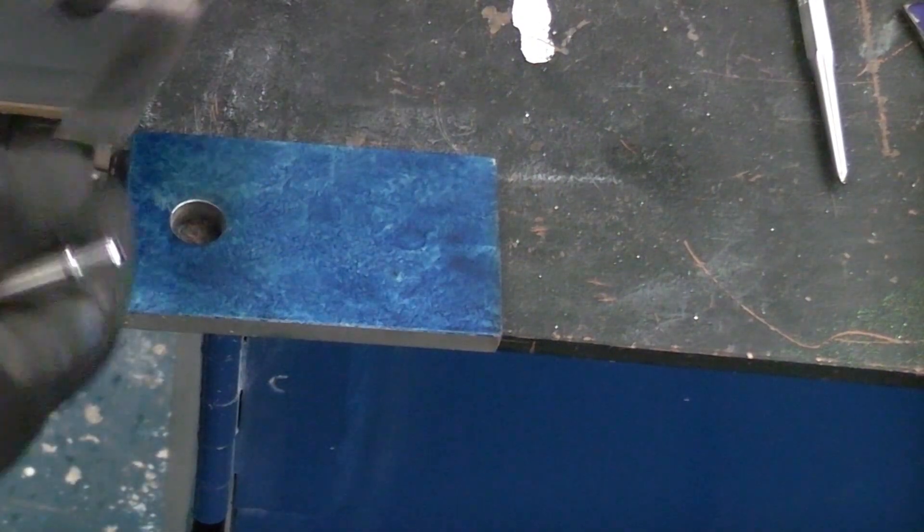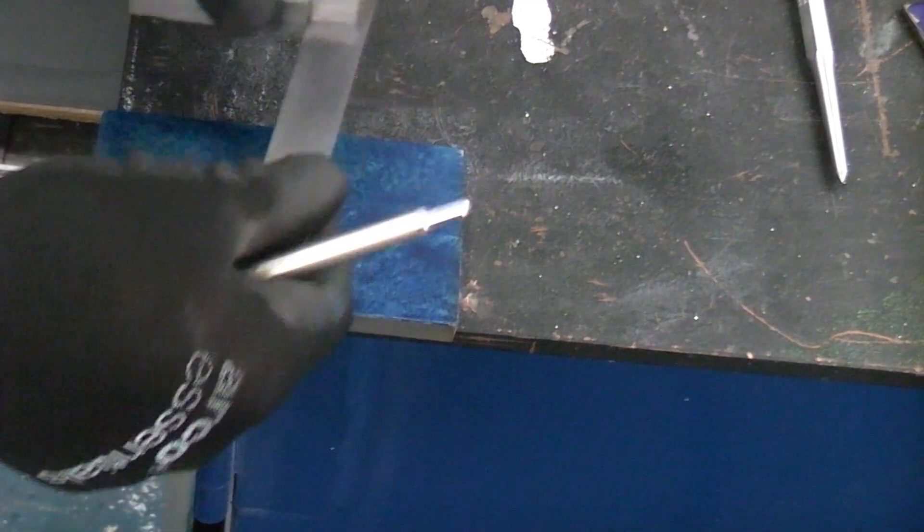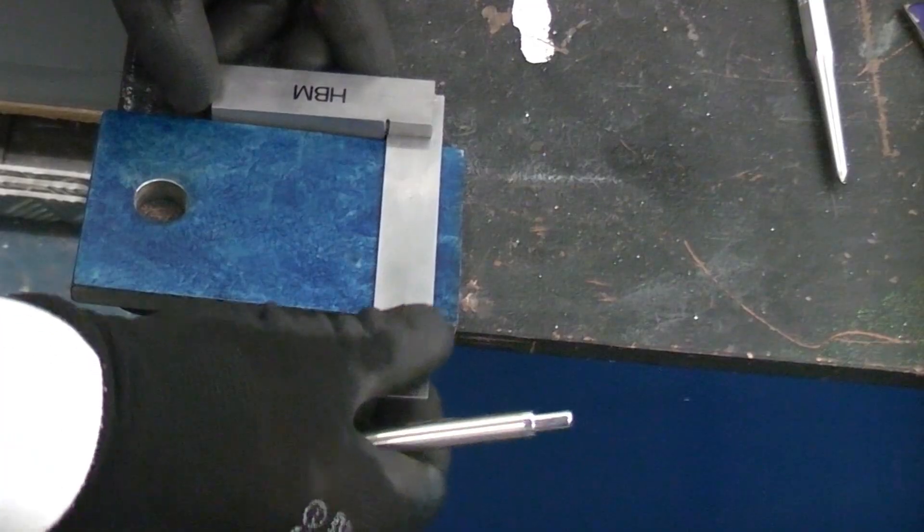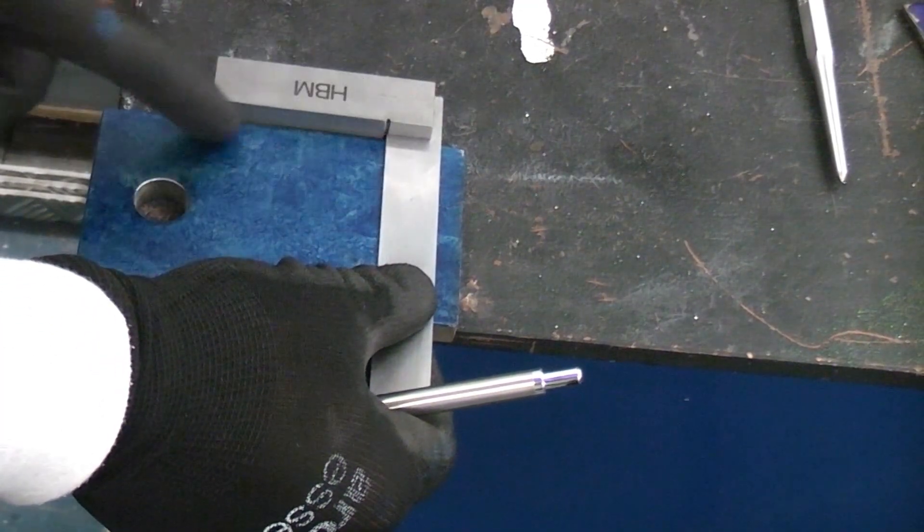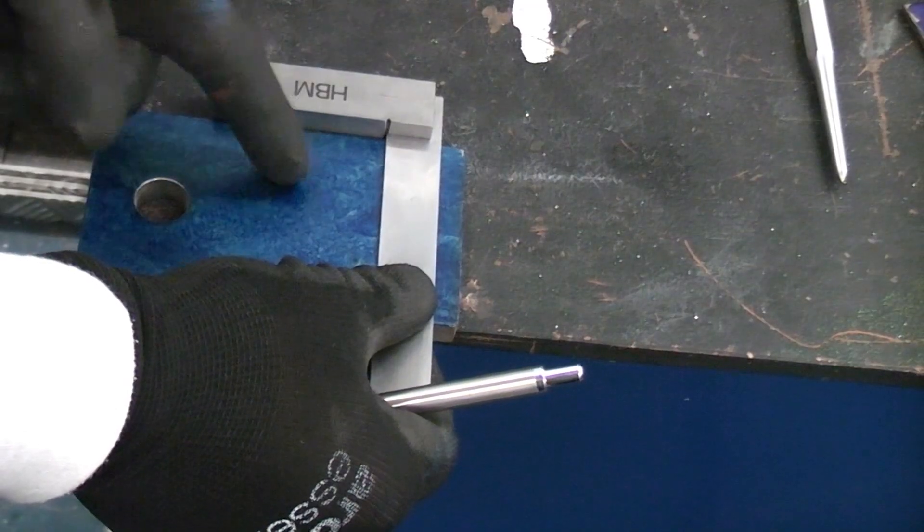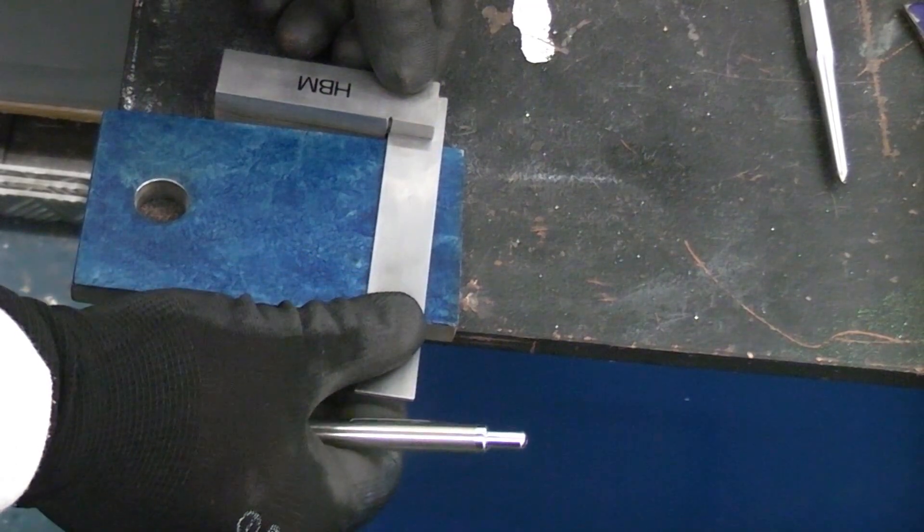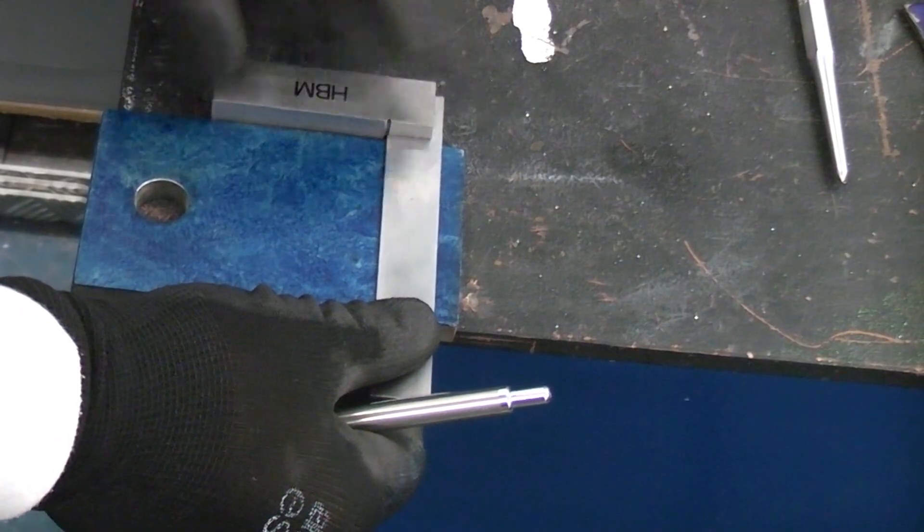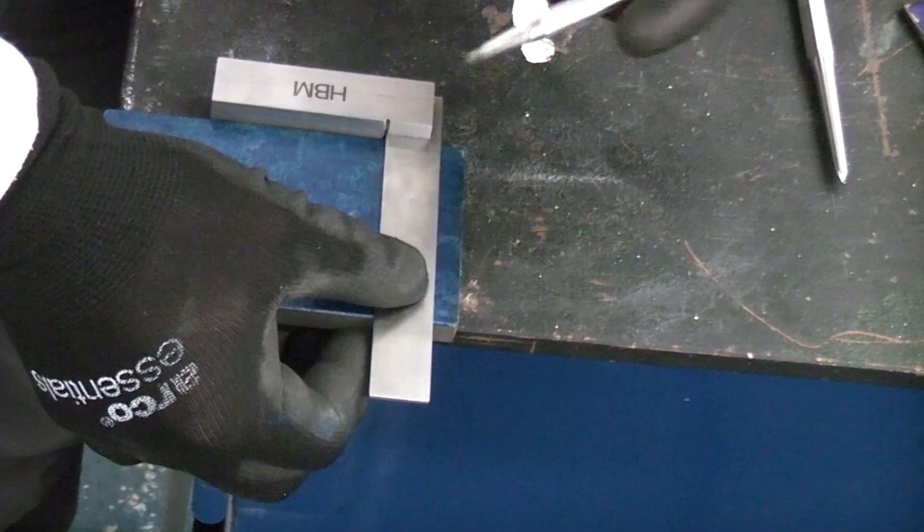So to start off we're going to get the engineer's square and scribe a straight line on this piece of metal. It's absolutely critical that you get the actual edge on the square straight up against the piece of metal. You don't want it on an angle, it's got to be touching all the way along. We're now going to scribe a straight line across this piece of metal.